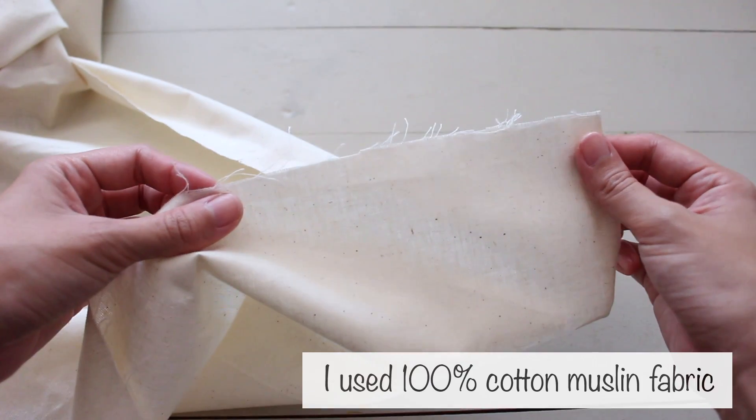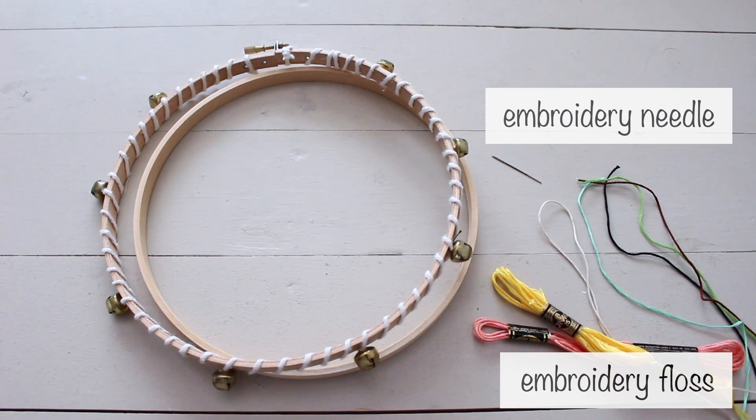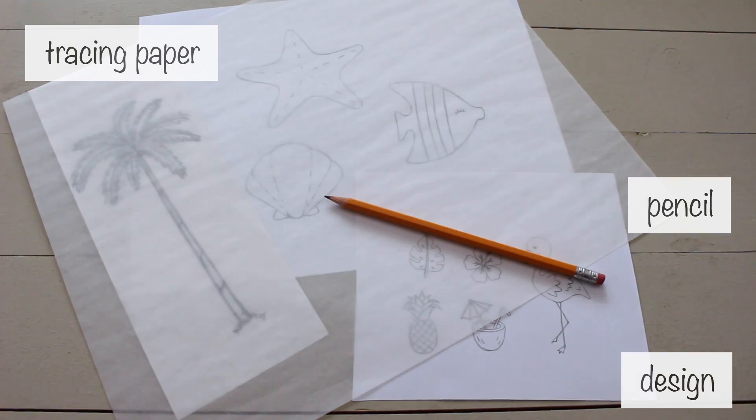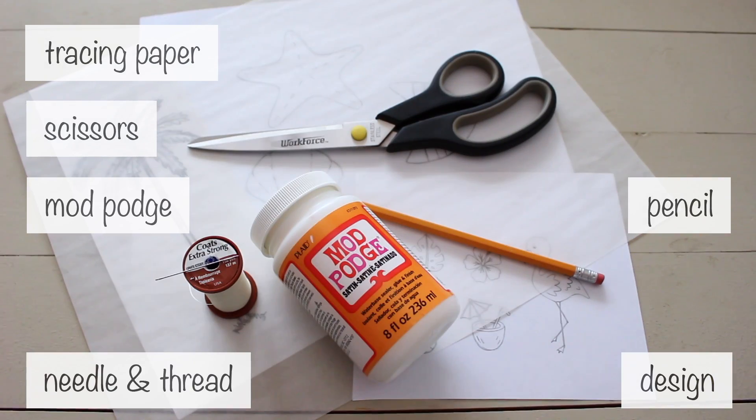For supplies, you'll need fabric, embroidery floss, needle, and hoop, your design, tracing paper, a pencil, scissors, mod podge, and a regular needle and thread to sew on your patches.